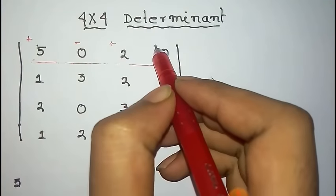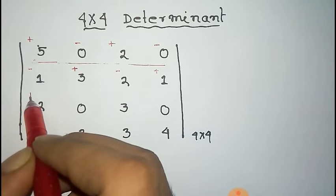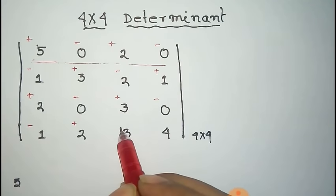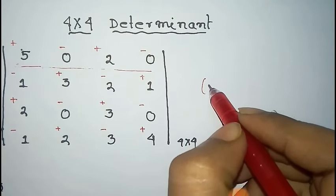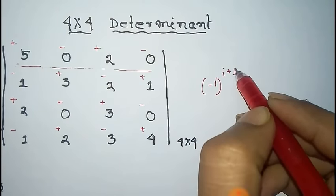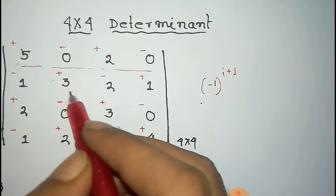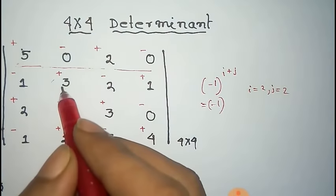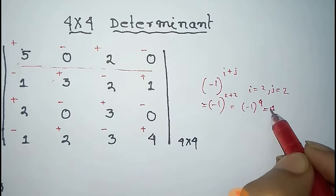The sign convention continues: plus minus plus minus, minus plus minus plus. You must remember the rule: minus one to the power i plus j. Here, i is the row number and j is the column number. For element 3, the row number is 2 and column number is also 2, so it's minus one to the power two plus two, which is minus one to the power four, equal to plus one — so the sign is plus.